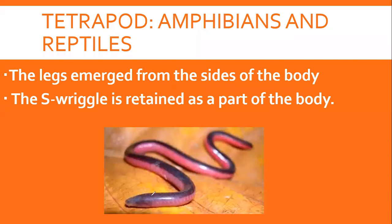Snakes اور amphibians میں caecilians دونوں legless ہوتے ہیں، اس لیے مچھلی کی طرح اپنی body کو دائیں بائیں لہرا کر چلتے ہیں — اسے S-retical movement کہتے ہیں۔ یہاں تک کہ اگر آپ crocodile یا lizard کو چلتے دیکھیں تو ان میں بھی تھوڑا spiral pattern موجود ہے — body right اور پھر left، alternatively turn ہوتی ہے۔ اس کا مطلب ہے fish والے locomotion کا style ان میں ابھی جھلک موجود ہے۔